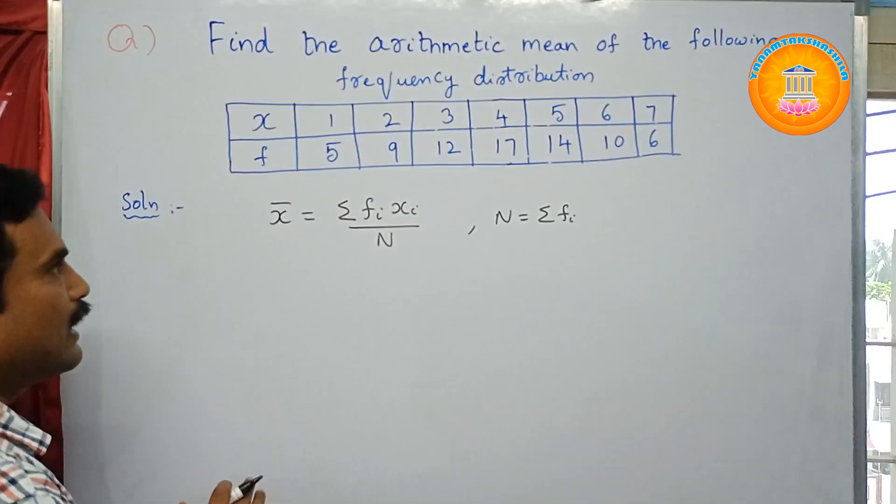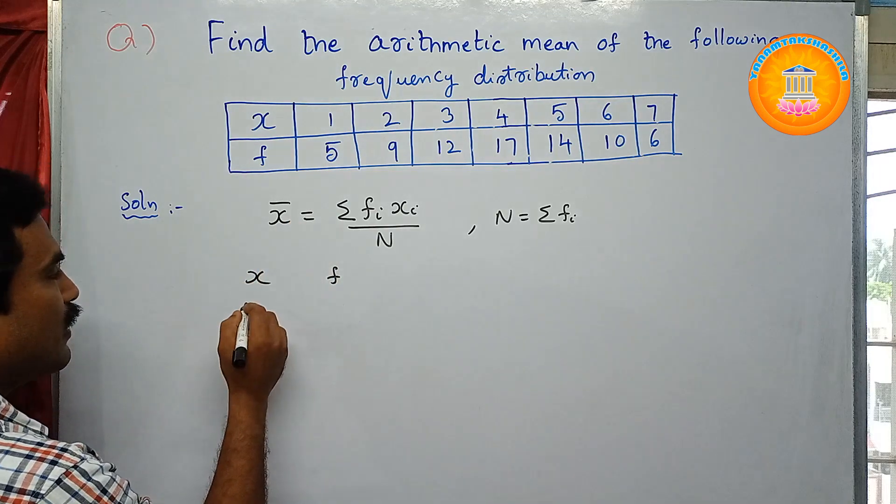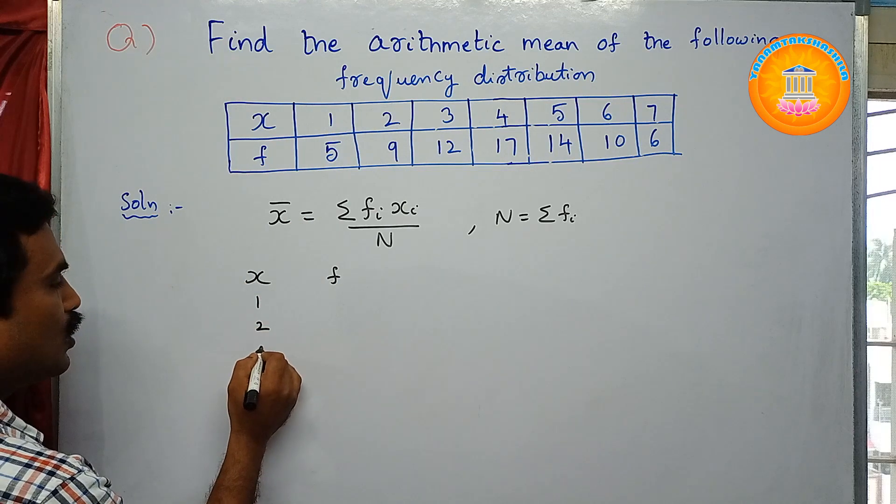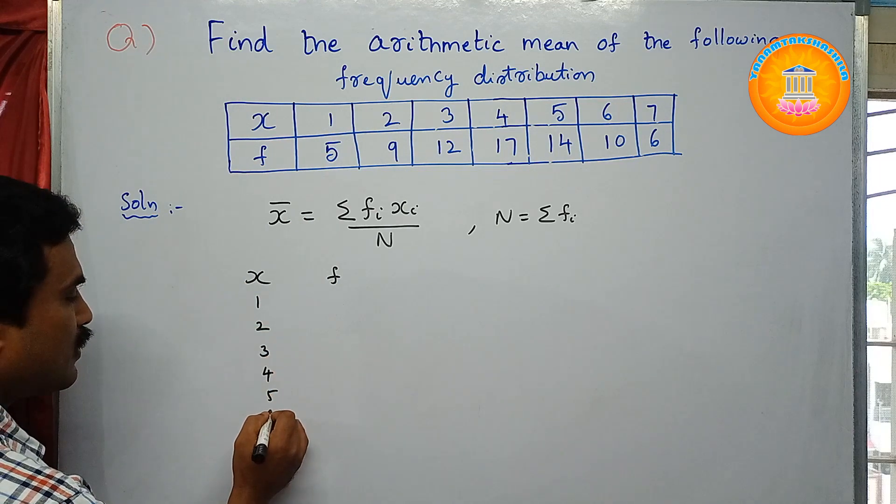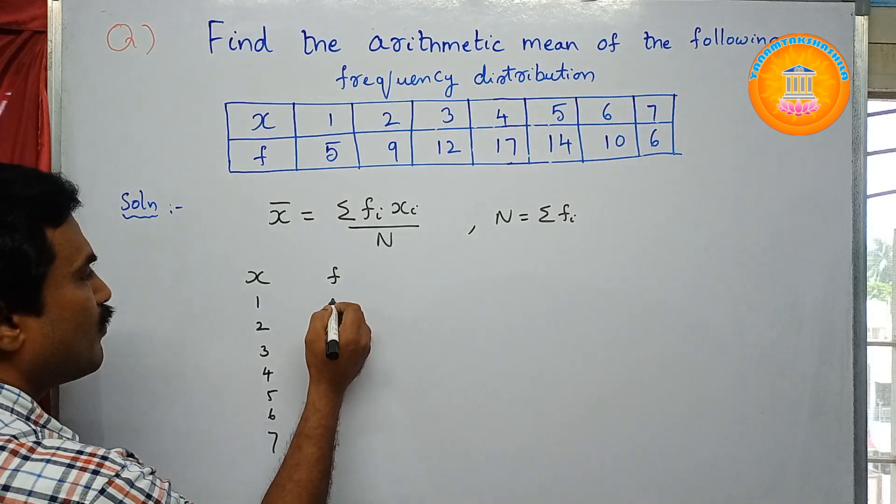First write here X and here f. What are the X values here? X values are 1, 2, 3, 4, then 5, 6, 7.